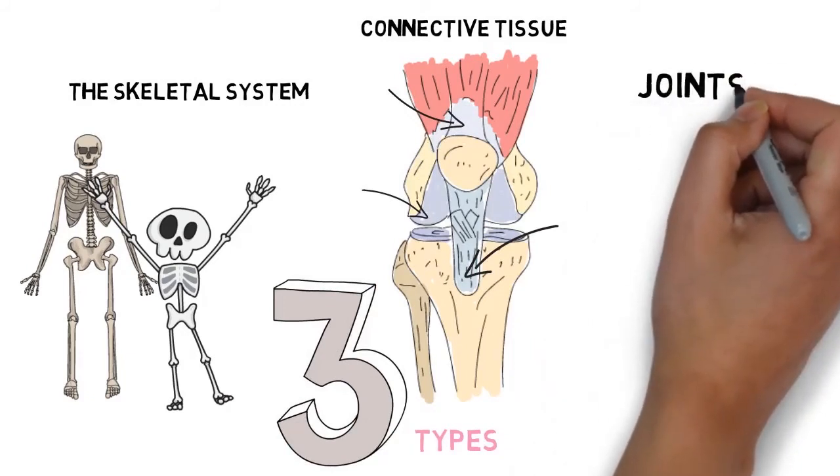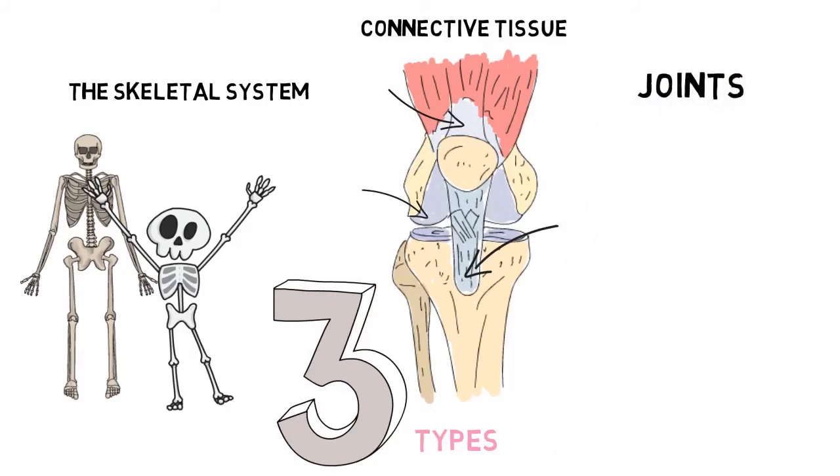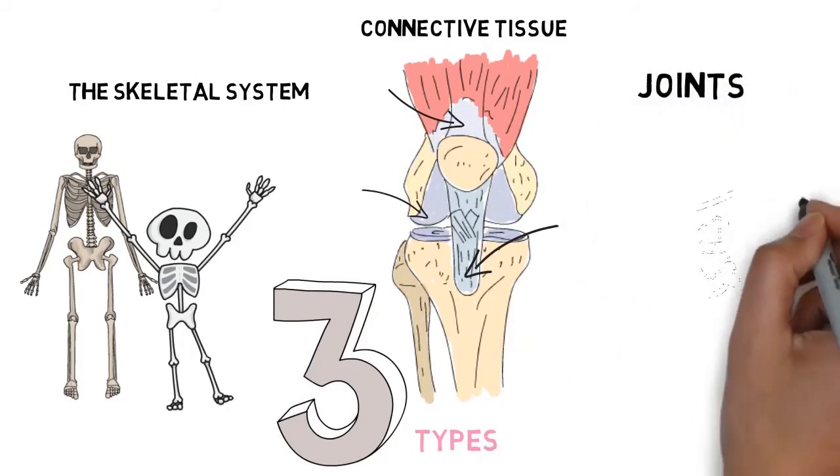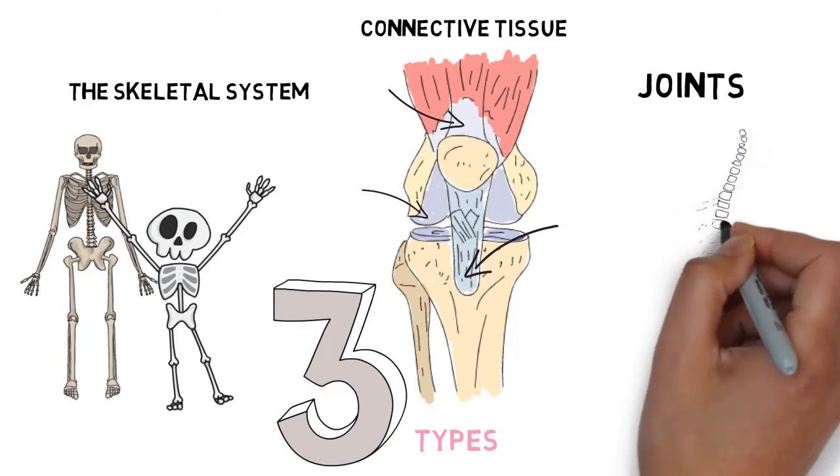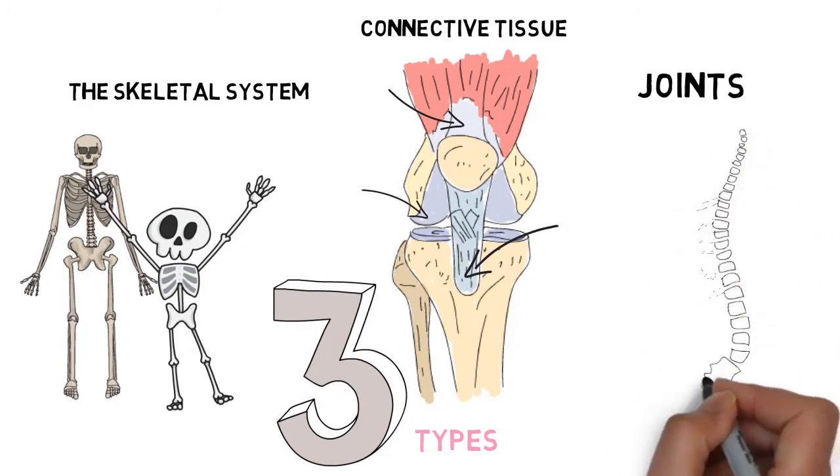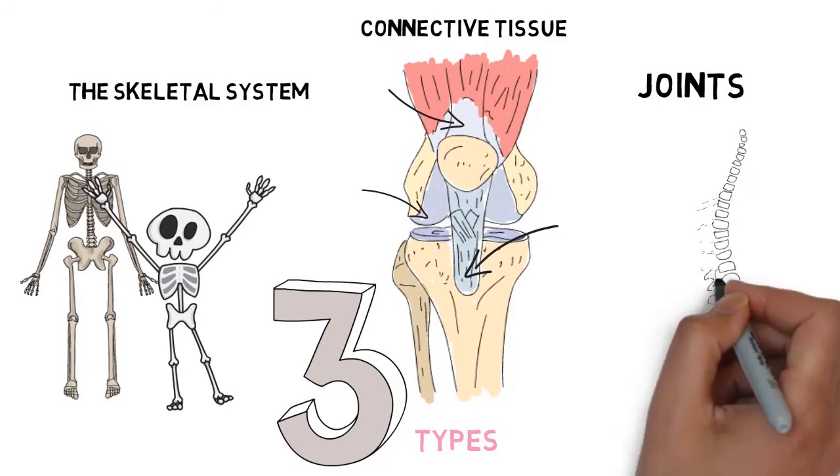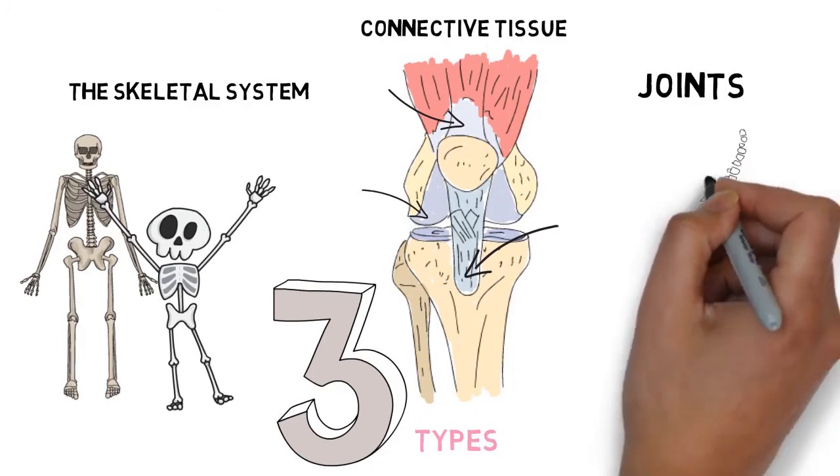Joints. There are two types of joints: slightly movable and freely movable. Slightly movable joints, like vertebrae, rest on a bed of cartilage supported by ligaments and only move a little.